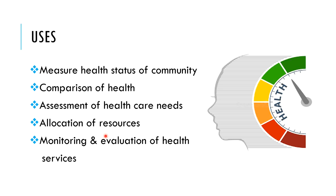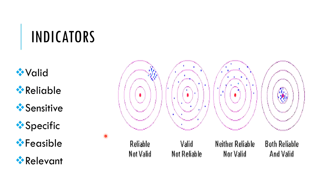The health indicators discussed today should be very clear from an examination point of view. An ideal health indicator should have the following characteristics: it should be valid, meaning the indicator should actually measure what it is supposed to measure. For example, mammography should be able to identify all lesions present in the mammary gland that are not evident externally.